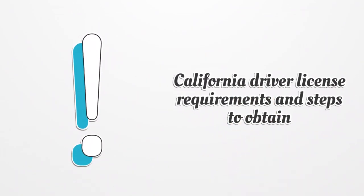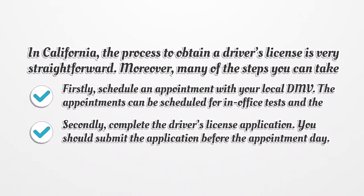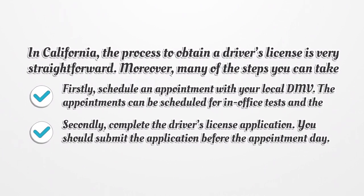California Driver License Requirements and Steps to Obtain. In California, the process to obtain a Driver's License is very straightforward. Moreover, many of the steps you can take online. Firstly, schedule an appointment with your local DMV. The appointments can be scheduled for in-office tests and the behind-the-wheel driving test. Secondly, complete the Driver's License application. You should submit the application before the appointment day, so when you arrive at the DMV office, they can verify that the form is completed properly.